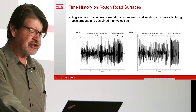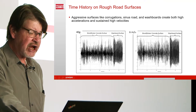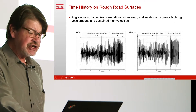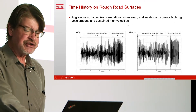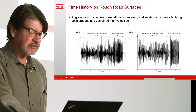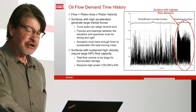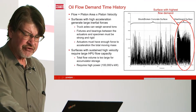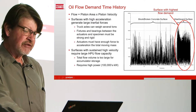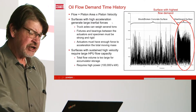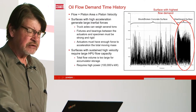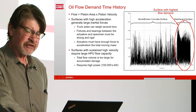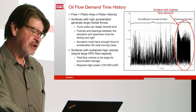Here's a time history on some rough road surfaces — broken concrete and a washboard surface — 40 G's and 6 meters a second. Pretty severe surface, but this is real data. The surface with the highest flow demand is the washboard surface. You can see how dense and high the velocities are, continuously moving. We've got about 4,000 liters per minute, with peak flow almost 5,000 liters a minute.